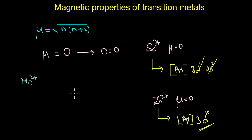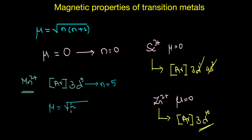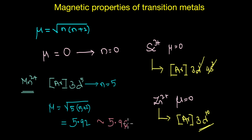All you need to do is first figure out the number of unpaired electrons in Mn²⁺ ions, then substitute that value into the formula. The electronic configuration of Mn²⁺ is [Ar] 3d⁵, meaning it has five unpaired electrons, so n = 5. Substituting into the formula gives μ = √(5 × 7) = √35 ≈ 5.92 Bohr magnetons, which is very close to the observed value of 5.96.